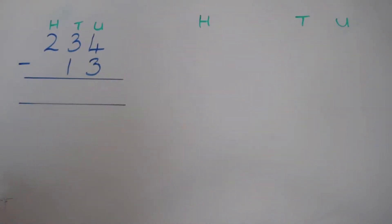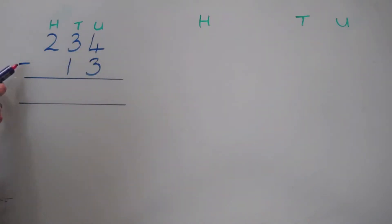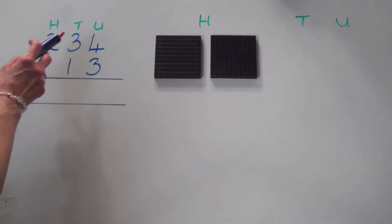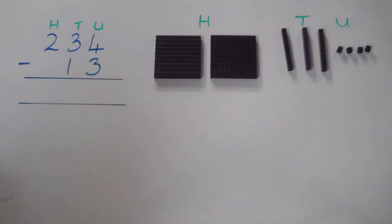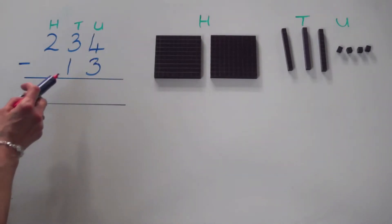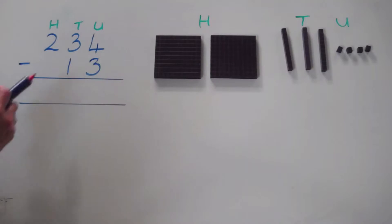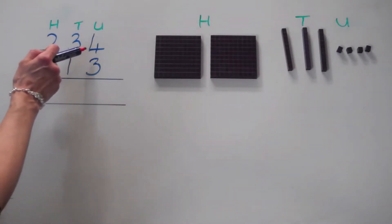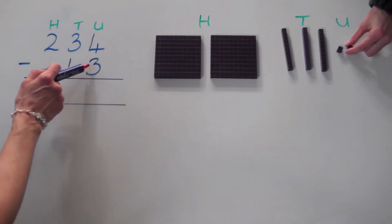This calculation is two hundred and thirty-four subtract thirteen. So that is two hundreds, three tens, and four units, and we need to take away one ten and three units. Starting with the units, we need to take away three from four units, so four take away three leaves us with one.